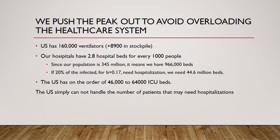The real problem and reason we have to push the peak out is our healthcare system capacity. We have on the order of 160,000 ventilators with another 8,900 in stockpile. Our hospitals have 2.8 hospital beds per 1,000 people — given our population of around 345 million, that means roughly 1 million hospital beds. If 20% of the infected at peak need hospitalization for a beta of 0.17, we would need 44 million beds. We simply don't have it. We have to do everything we can to decrease transmissivity so that we can better handle the number of patients we will see.